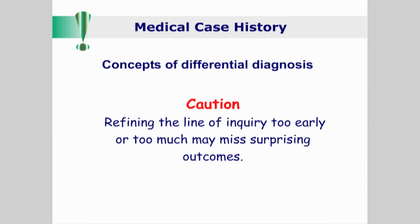However, even at this very early stage, a refining process to the line of questioning should be evident. For instance, by simply knowing the gender and age of the patient, your inquiries may be tailored to what is relevant for that person. Although a word of caution here: refining the line of inquiry too early or too much may miss surprising outcomes.